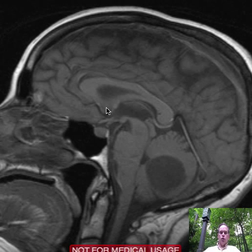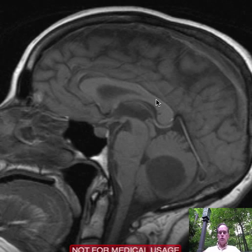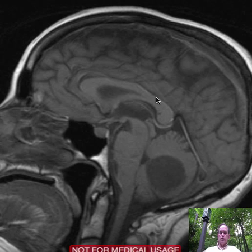Here we have the corpus callosum. We have the rostrum right here, the genu — it means knee, though we don't call it the knee of the corpus callosum. Here's the body of the corpus callosum, and here is the splenium of the corpus callosum. This is actually a structure called the fornix.